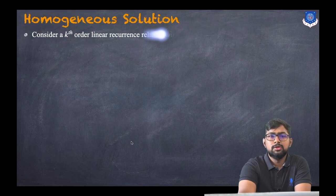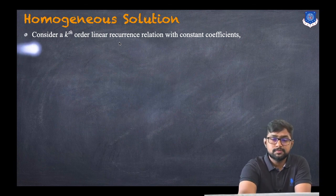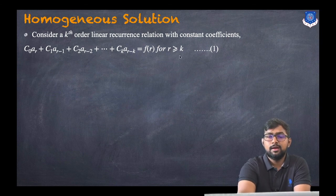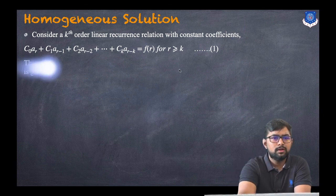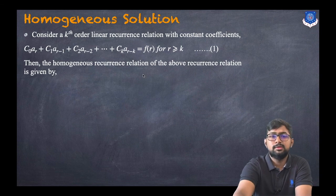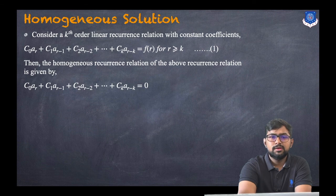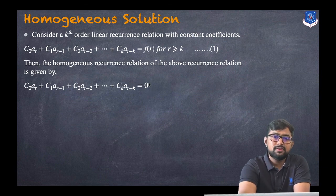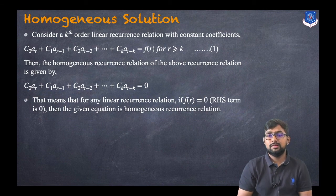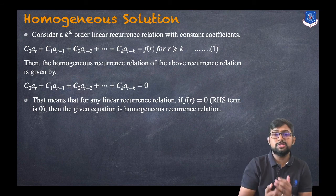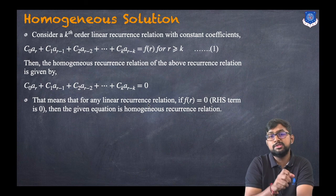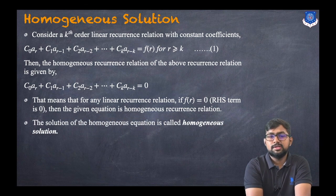Now let us understand what is a homogeneous solution. Consider a k-th order linear recurrence relation with constant coefficients: c_0 * a_r + c_1 * a_{r-1} + c_2 * a_{r-2} + ... + c_k * a_{r-k} = 0. The difference from the earlier equation is that f(r) = 0. So whenever the right-hand side equals zero, we say it is a homogeneous linear recurrence relation, and its solution is called the homogeneous solution.